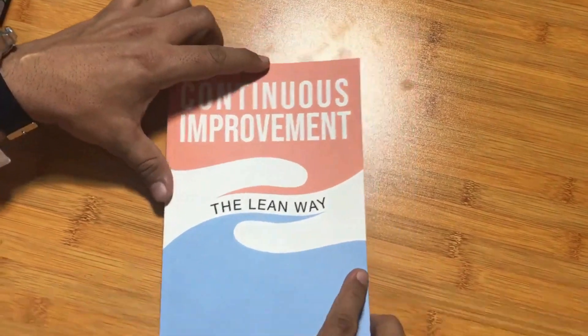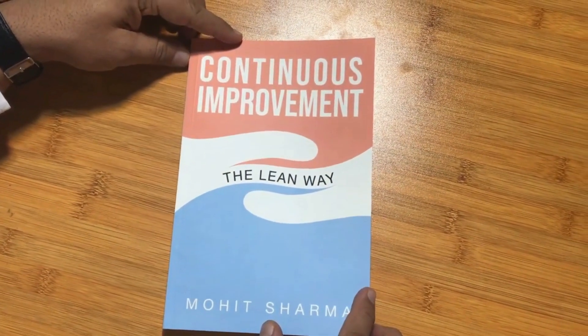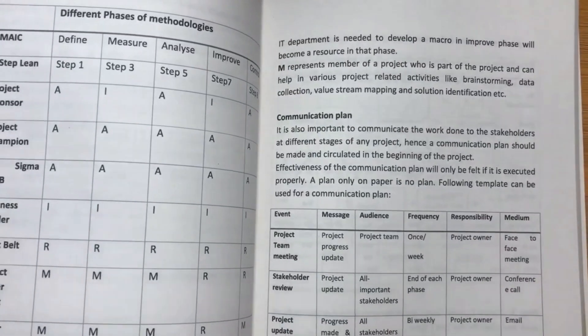I want to share my book with you, which is 'Continuous Improvement: The Lean Way.' The cover has subtle colors, is very pleasing to the eyes, the print quality is excellent, and it is easy and convenient to read. I have read many books on quality — some focus only on tools and methodology, some only on case studies — but very few cover how to mentor quality projects. My attempt here is to bring all three aspects together in one book as a single point of reference for quality practitioners.